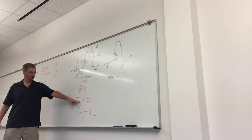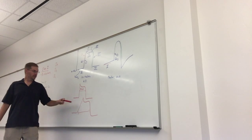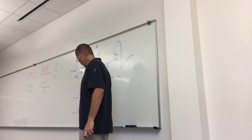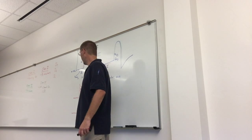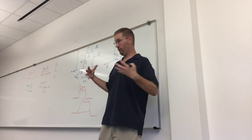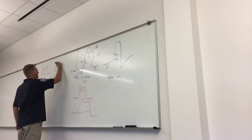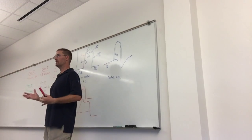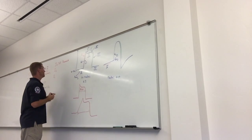Class 1A agents primarily have negative dromotropic effects — it takes longer for that action potential to conduct. The big thing they do is increase the length of the action potential. There's really only one drug in this class that we see used, and it's procainamide. Procainamide is a class 1A agent.